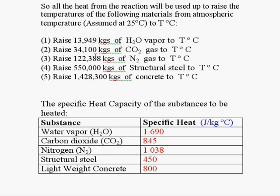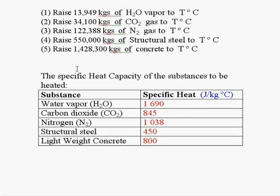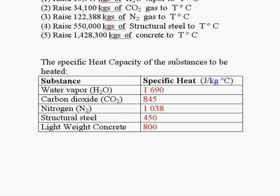The second one to raise 34,100 kilograms of carbon dioxide gas to T degrees Celsius. The third one, 122,388 kilograms of nitrogen gas to T degrees Celsius. The fourth one, 550,000 kilograms of structural steel to T degrees Celsius. And the fifth one is to raise 1,428,300 kilograms of concrete to T degrees Celsius.